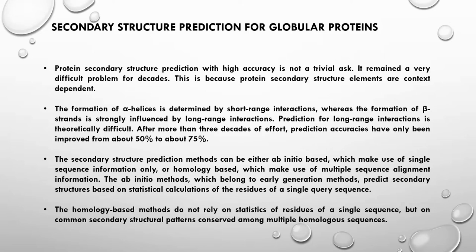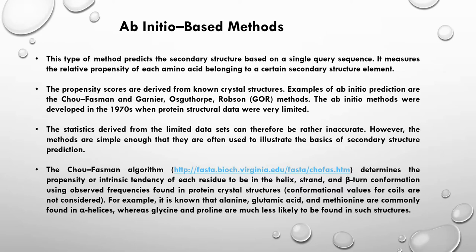Ab initio methods do not rely on homology or ancestral information. Instead, they rely on statistics of amino acid residues. Ab initio based methods predict secondary structures based on a single query sequence and measure the relative propensity of each amino acid to belong to a certain secondary structure element. Propensity scores are derived from known crystal structures. Examples of ab initio predictions are the Chou-Fasman method and the GOR method, which stands for Garnier, Osguthorpe, and Robson. These methods were developed in the 1970s when protein structural data were very limited.